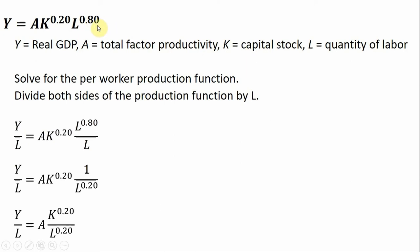We have constant returns to scale for this aggregate production function since the exponents here on the K and L sum to 1. So the first thing we're going to do is solve for the per-worker production function. And the way to do that is we're going to divide both sides of the production function by L units of labor.